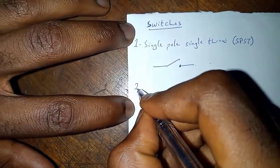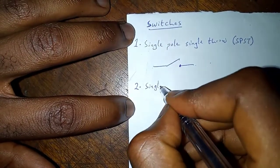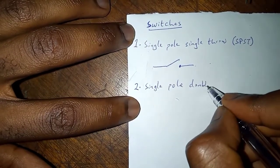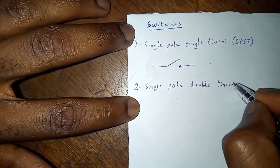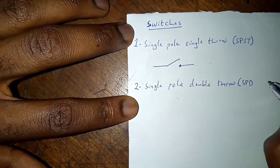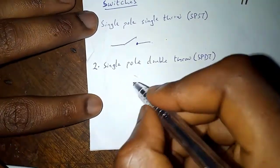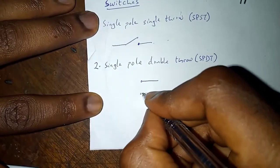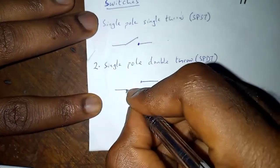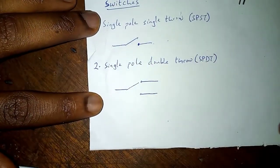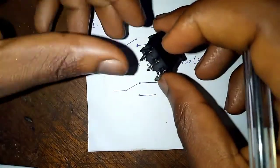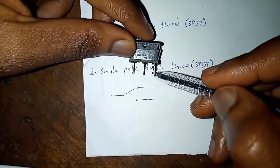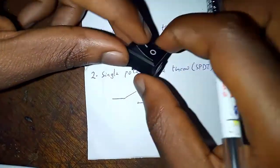Secondly, we are going to look at single pole, double throw, SPDT. The symbol for this is two throws and one pole. A few examples we have are this one. You can see three terminals: a pole and the throws.